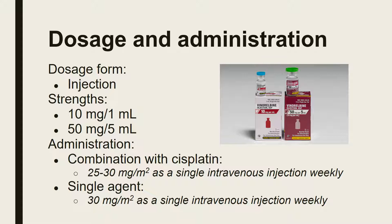Vinorelbine comes in injection form. The strengths are 10 mg per 1 mL and 50 mg per 5 mL. For administration, it can be used in combination with cisplatin at 25 to 30 mg/m² as a single intravenous injection weekly. As a single agent, the dose is 30 mg/m² as a single intravenous injection weekly.